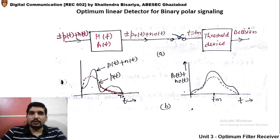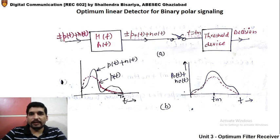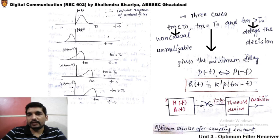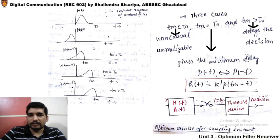In the last class, we talked about the optimum linear detector for binary polar signaling. We started with the concept that the basic bipolar signal has plus one representing symbol one and minus one representing symbol zero, with some noise when received. We discussed how to receive it correctly and design this detector to be optimum. We found the impulse response for this optimum linear detector as k' · p(tm − t), where k' = k₂/N₀, assuming a white Gaussian noise channel, with sampling instant tm = T.